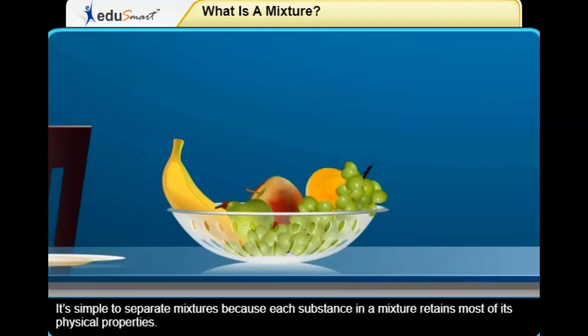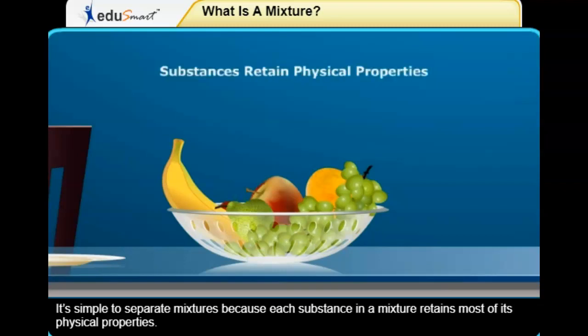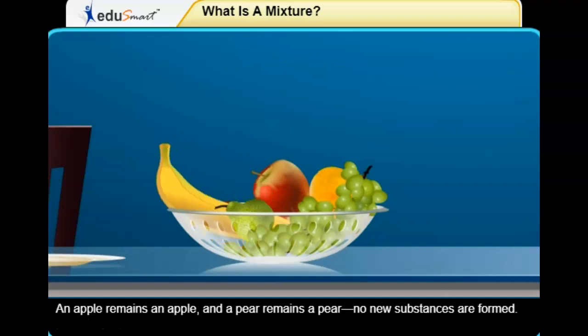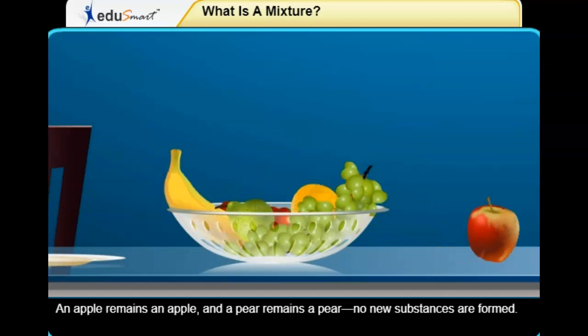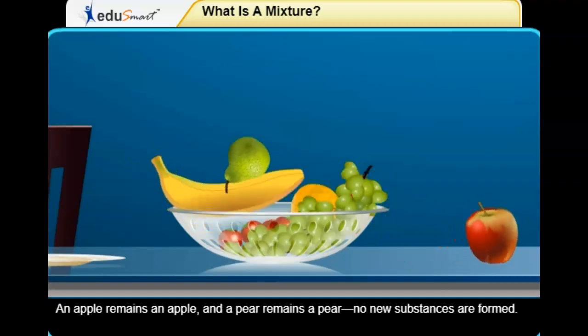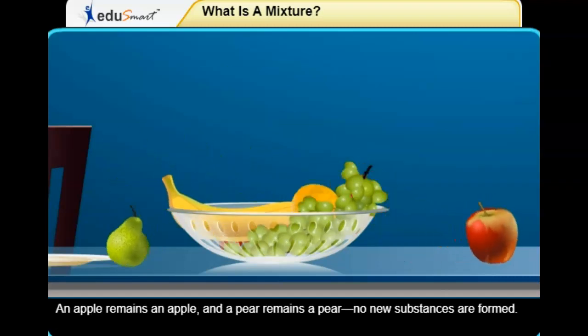It's simple to separate mixtures because each substance in a mixture retains most of its physical properties. An apple remains an apple, and a pear remains a pear. No new substances are formed.